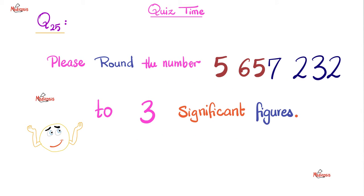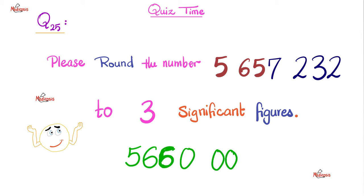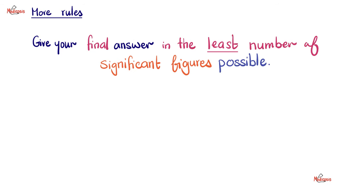Try this one: 5,657,232 — please round that to three significant figures. Pause and try to answer this yourself. We write 5, 6, 5 — these are my three significant figures. But look what came after the 5: it's a 7, which means I need to round it up. So it becomes 6: the answer is 5,660,000. The rest are zeros. A pearl for the pros: give your final answer in the least number of significant figures possible — the least you can get away with.